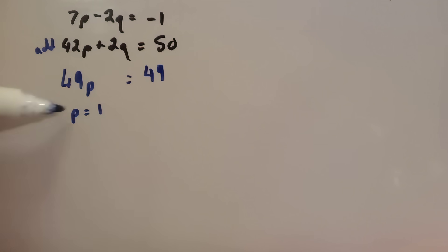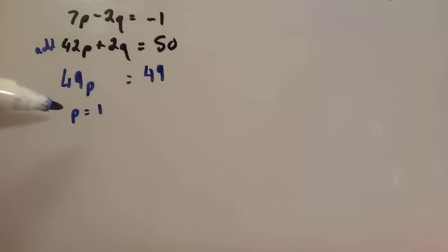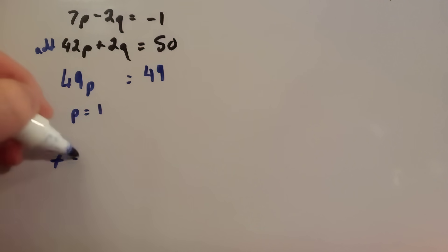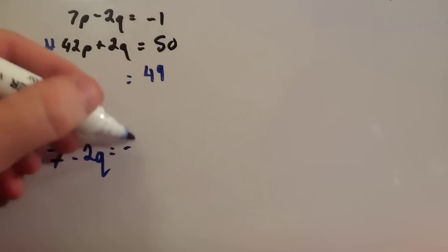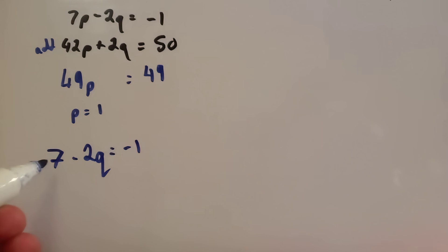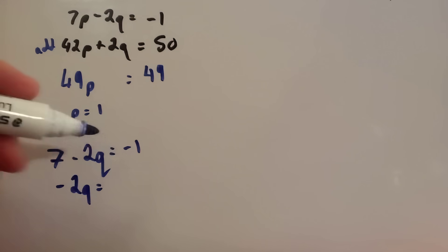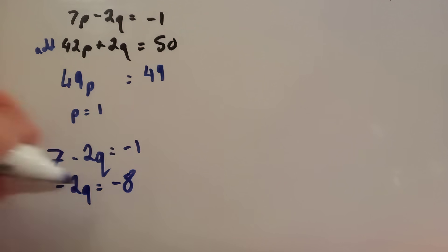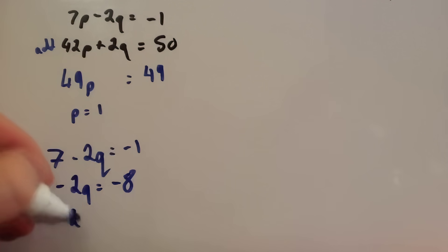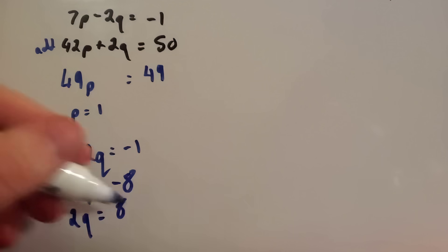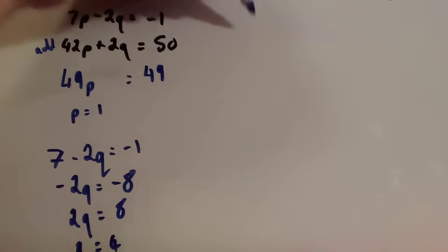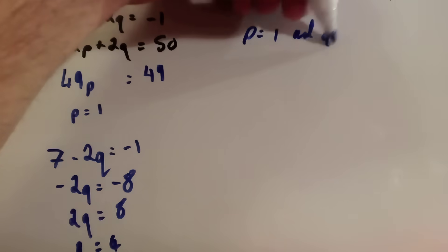Now take p equals 1 and substitute into the top equation: 7 times 1 is 7, subtract 2q equals minus 1. Subtract 7 from both sides: minus 2q equals minus 8. Multiply through by minus 1 to get 2q equals 8, then halve it to get q equals 4. So p equals 1 and q equals 4.